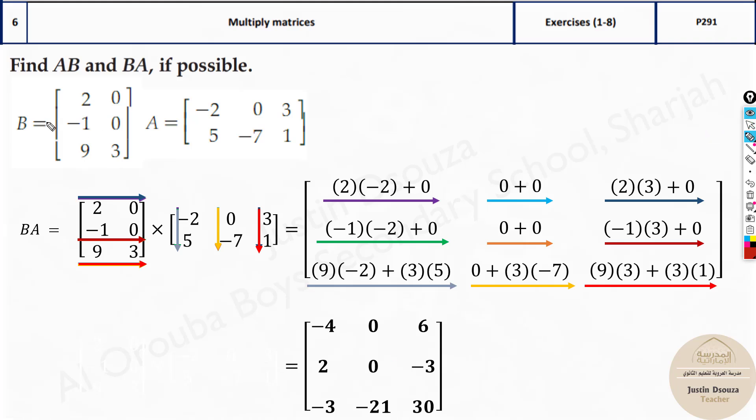Now one more thing which I forgot to tell. When we write the dimensions, now this is 3 by 2, 2 by 3, right? This must match. Yes, we can multiply. The resultant will be the rows of the first matrix and the columns of the second matrix. So it's 3 by 3 here. That's how we get it.